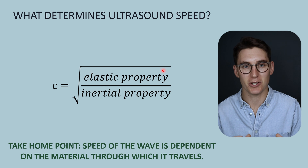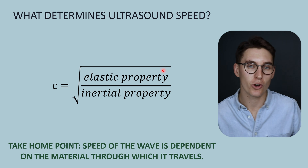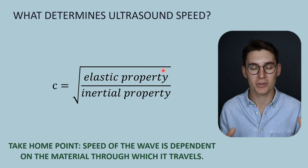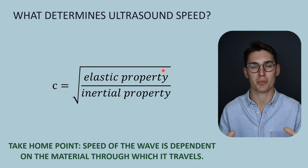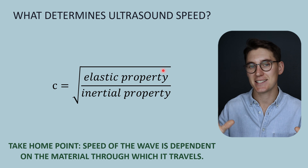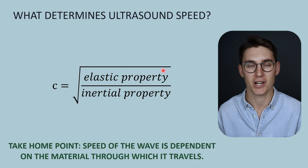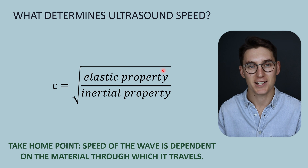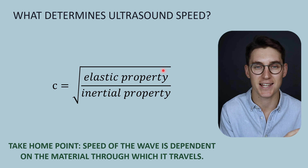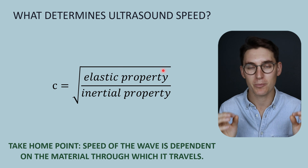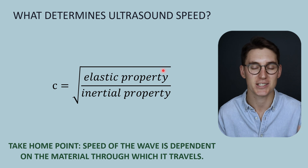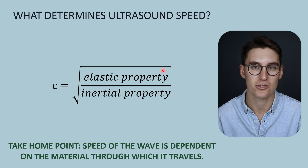An increase in density will actually lead to a slower speed of sound. If you take two materials with the same elastic properties — say dry air and humid air — the density of humid air is greater than that of dry air, and sound will actually travel quicker in the dry air, the less dense material. The less dense a material is, the faster sound travels through that medium.